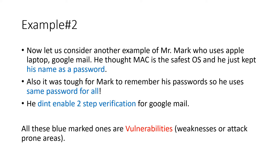Now let us consider another example of Mr. Mark, who uses an Apple laptop and Google Mail. He thought macOS is the safest OS, and he simply kept his name as a password. It was also tough for Mark to remember his password, so he used the same password for all accounts. He didn't enable two-step verification for his Google Mail. All these highlighted items are called vulnerabilities — weaknesses or attack-prone areas.